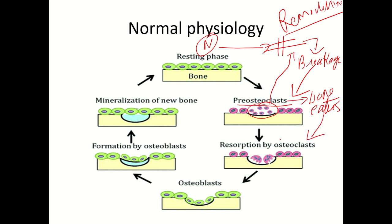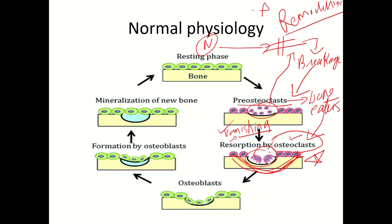The resorption of osteoclasts is also important — resorption means vanishing. Once the fractured part is eaten up, the osteoclasts need to vanish; if not, there is excessive degeneration or resorption of the bone, leaving no bone remaining. So resorption of osteoclasts is a very important stage in remodeling. Once resorption has occurred, the next stage is osteoblast formation — bone formation.